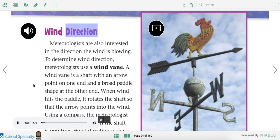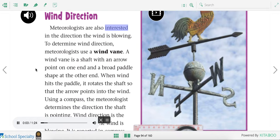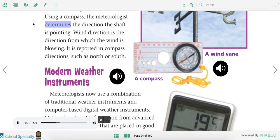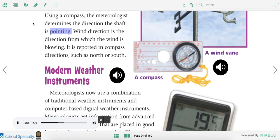Meteorologists are also interested in the direction the wind is blowing. To determine wind direction, meteorologists use a wind vane. A wind vane is a shaft with an arrow point on one end and a broad paddle shape at the other end. When wind hits the paddle, it rotates the shaft so that the arrow points into the wind. Using a compass, the meteorologist determines the direction the shaft is pointing. Wind direction is the direction from which the wind is blowing. It is reported in compass directions, such as north or south.